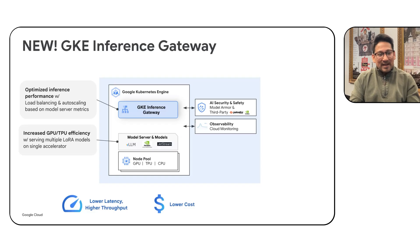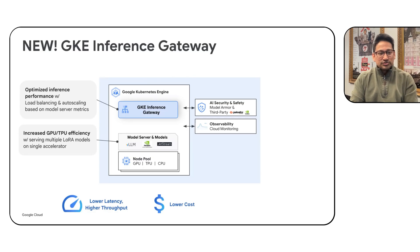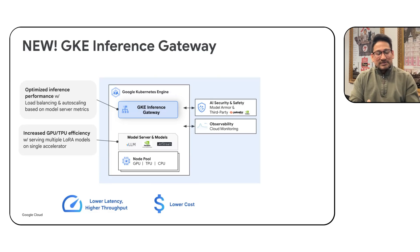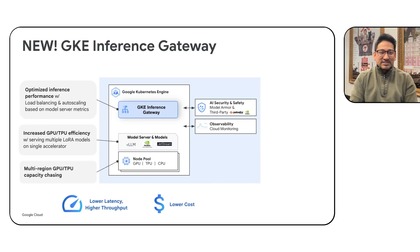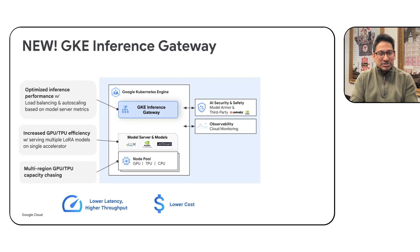Next, we are able to pack multiple LoRA fine-tuned models on a common GPU/TPU pool, allowing you to make more efficient use of your GPU/TPU infrastructure and also lower your cost. As GPU and TPU capacity is still constrained across different regions, GKE Inference Gateway can pull in GPU/TPU capacity across multiple Google Cloud regions and dynamically serve from whichever region has available capacity.